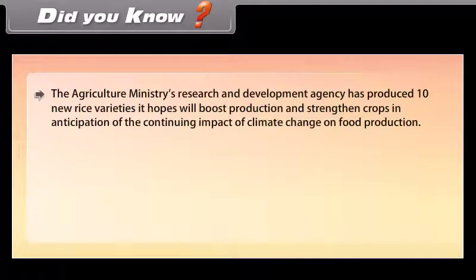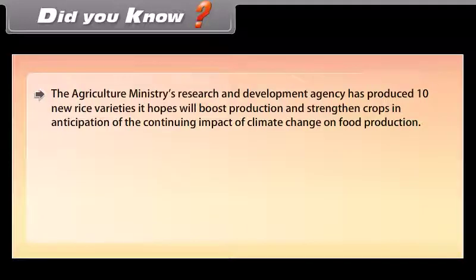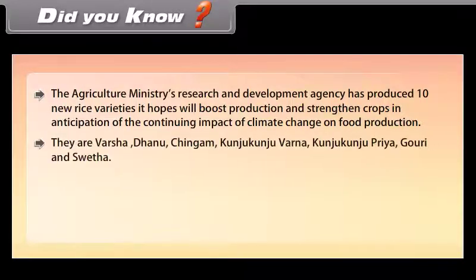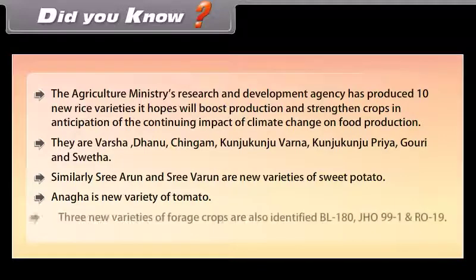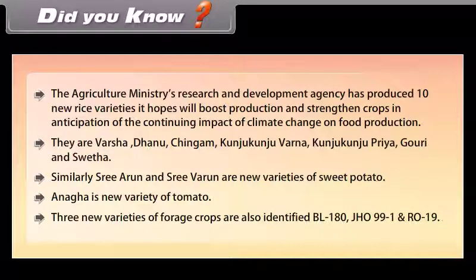The Agriculture Ministry's research and development agency has produced 10 new rice varieties that it hopes will boost production and strengthen crops in anticipation of the continuing impact of climate change on food production. These are Varsha, Dhanu, Chingam, Kunju, Varna, Priya, Gauri and Swetha. Similarly, Shri Arun and Shri Varun are new varieties of sweet potato; Anaga is a new variety of tomato; and three new varieties of forage crops are also identified: BL-180, JHO-99-1 and RO-19.